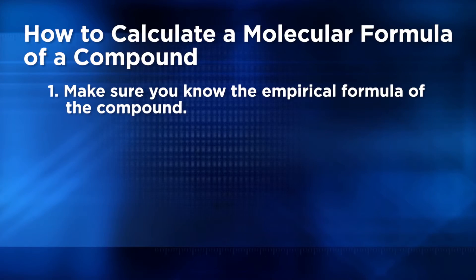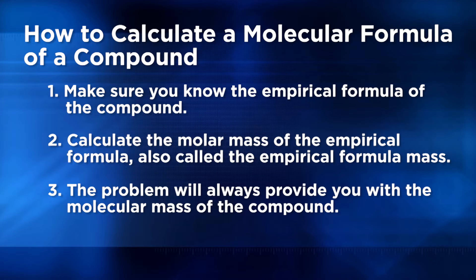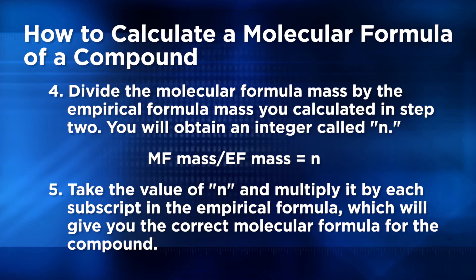When working these problems on paper, your teacher will always give you the molecular mass of the compound. Here are the steps: first, make sure you know the empirical formula. Then calculate the molar mass of the empirical formula, also called the empirical formula mass. Divide the molecular formula mass by the empirical formula mass to get an integer n. The final step is to take the value of n and multiply it by each subscript in the empirical formula, which will give us the correct molecular formula.